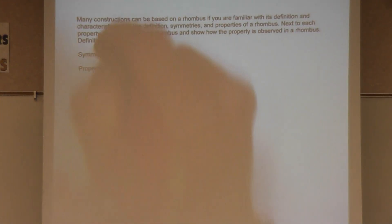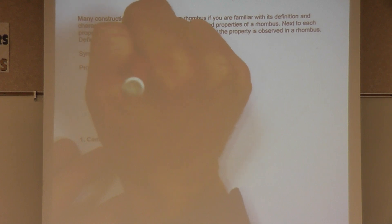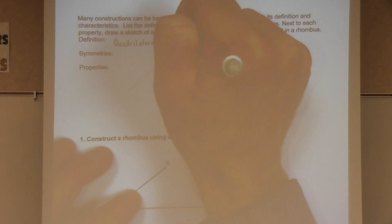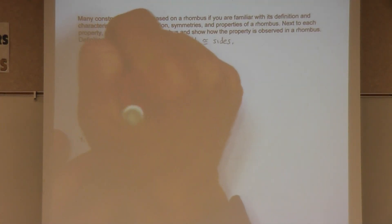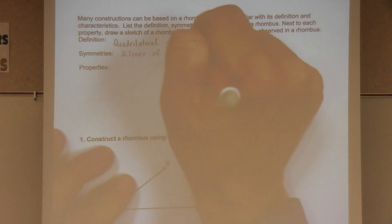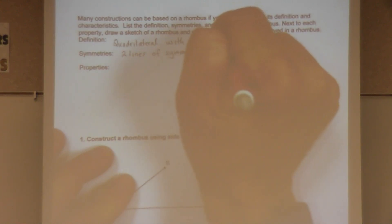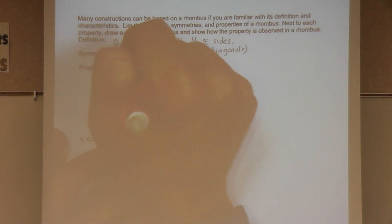A rhombus is a quadrilateral with four equal sides. A rhombus also has some symmetry — there are two lines of symmetry, which are both diagonals, and it also has 180-degree rotational symmetry.